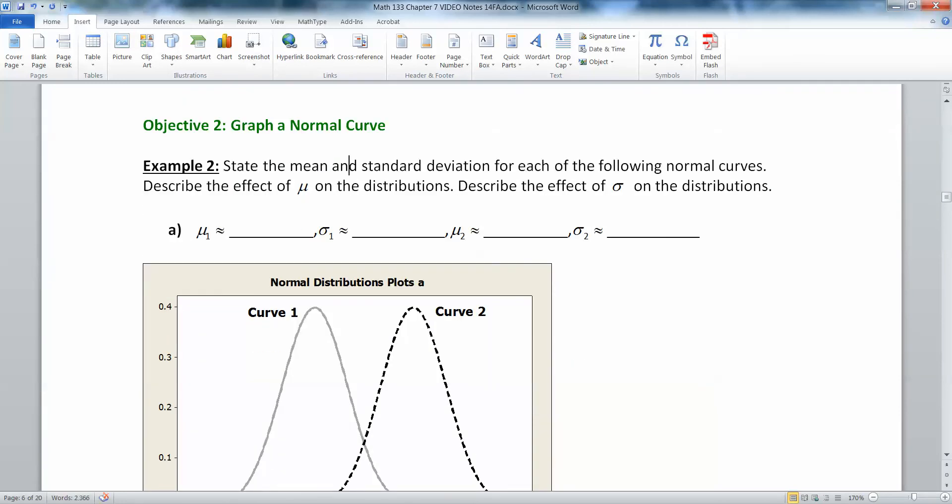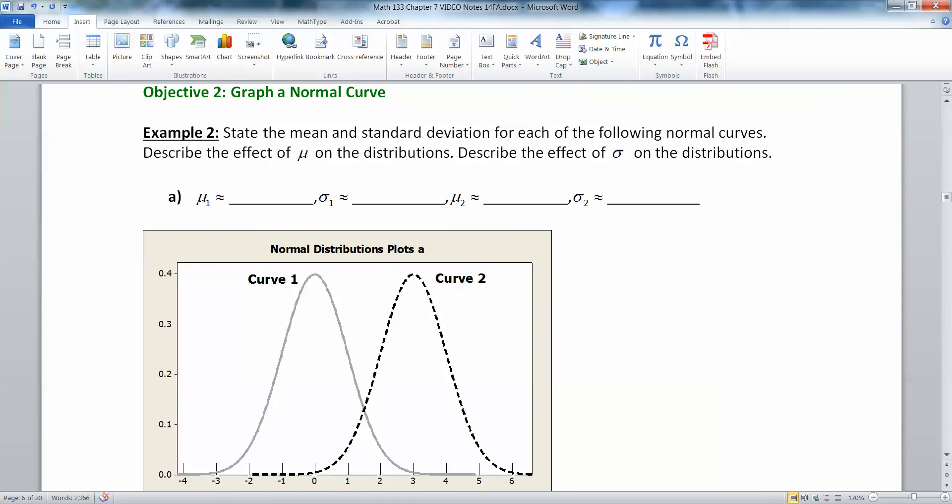All right. So let's look at these curves right here. And we want to figure out what the mean is and what the standard deviation is for each of these curves. So let's take a look. Now, remember the mean is where the center is, and the standard deviation is where the inflection point happens. So if you look at the gray curve, that's curve number 1, its mean is at 0.